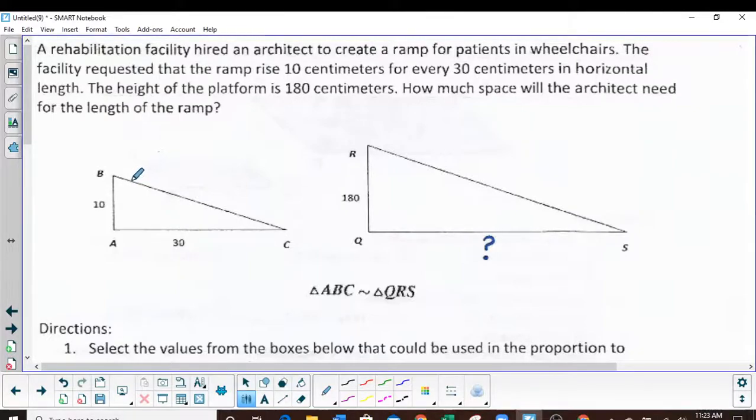It says a rehabilitation facility hired an architect to create a ramp for patients in wheelchairs. The facility requested that the ramp rise 10 centimeters for every 30 centimeters in horizontal length. The height of the platform is 180 centimeters. How much space will the architect need for the length of the ramp?